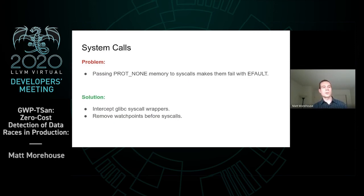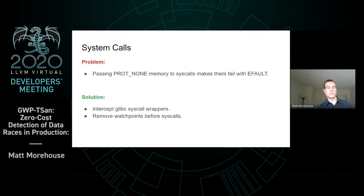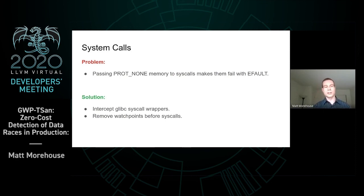The other issue we've run into is dealing with system calls. Since we use protected memory as our watchpointing mechanism, whenever we pass watchpointed memory to a system call, it will fail with EFAULT. Our current solution is to intercept syscall wrappers and remove watchpoints before doing the syscall itself. This is straightforward to do, but it does involve a lot of work to find out which syscalls we actually need to intercept.